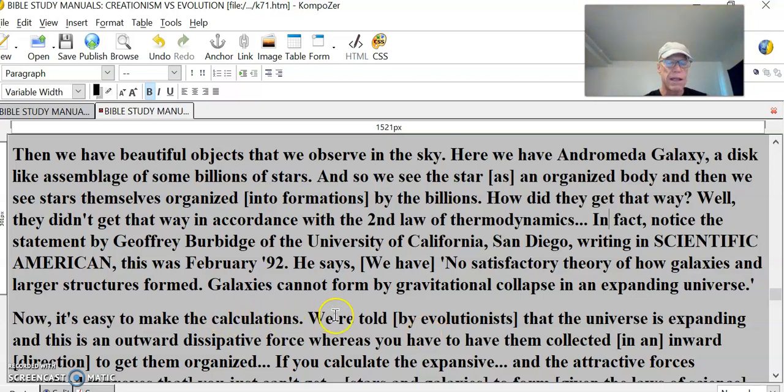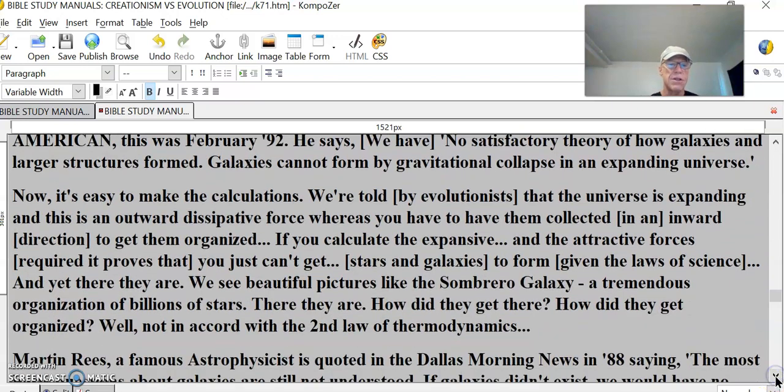It's easy to make the calculations. We're told by evolutionists that the universe is expanding, and this is an outward dissipative force, whereas you have to have them collected in an inward direction to get them organized. If you calculate the expansive and the attractive forces required, you just can't get stars and galaxies to form given the laws of science. And yet, there they are.